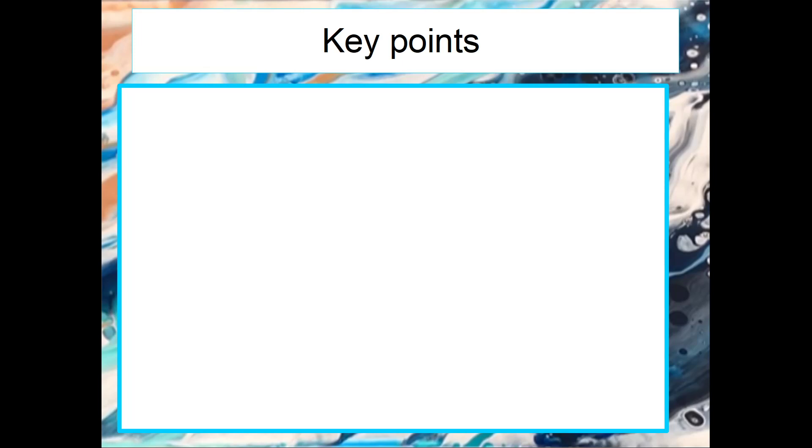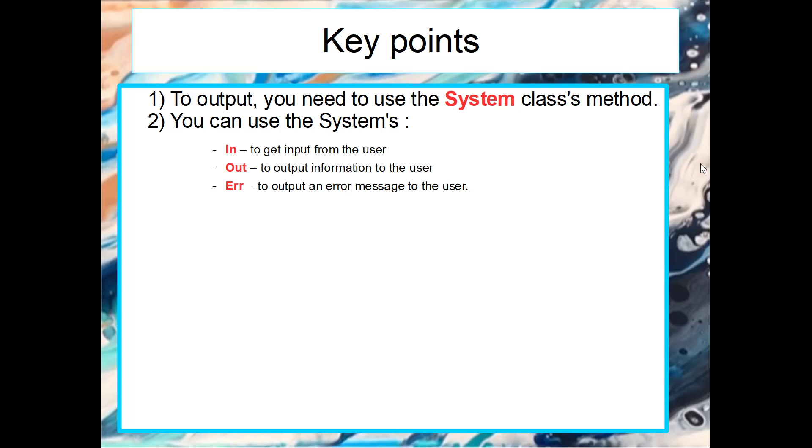The most important thing to remember for input and output is the System class. You will have to use a number of System class methods to either output information or get information. If you want to get an input from the user we would say System.in. To output some information we would say System.out and then print. There can be a few options after that second dot, so there's not just print, there's a few other things we can do. It's the same if you want to output an error message. You start with System, then you say .err and then .println. So there are a number of options that you can choose from from the second dot.